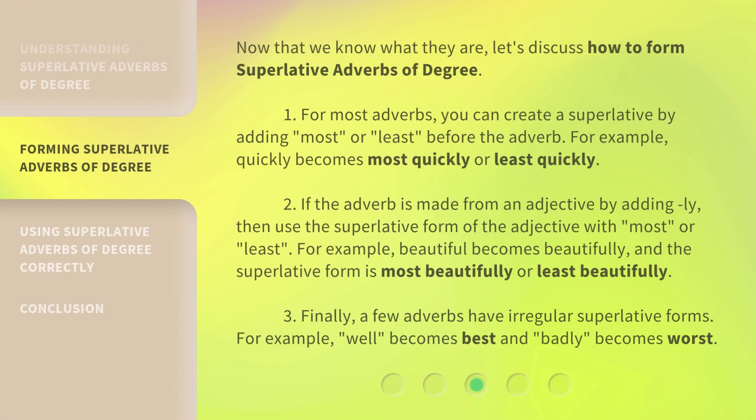Now that we know what they are, let's discuss how to form superlative adverbs of degree. First, for most adverbs, you can create a superlative by adding 'most' or 'least' before the adverb — for example, 'quickly' becomes 'most quickly' or 'least quickly.' Second, if the adverb is made from an adjective by adding '-ly,' use the superlative form of the adjective with 'most' or 'least' — for example, 'beautiful' becomes 'beautifully,' and the superlative form is 'most beautifully' or 'least beautifully.' Finally, a few adverbs have irregular superlative forms — for example, 'well' becomes 'best' and 'badly' becomes 'worst.'